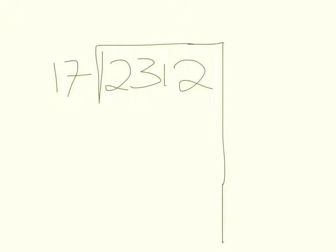So to do partial quotients, we have to think how many seventeens go into 2,312. I started by thinking 2,000, so 17 times 10 is 170, times 100 is 1,700.